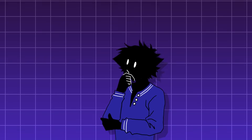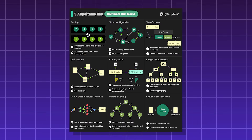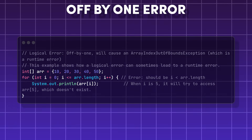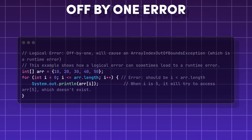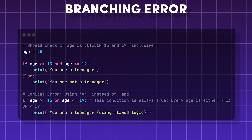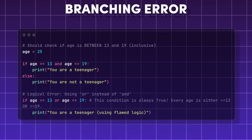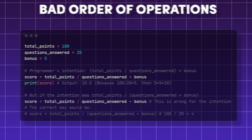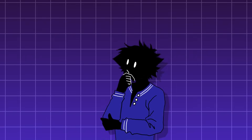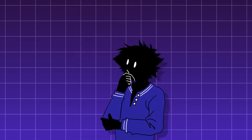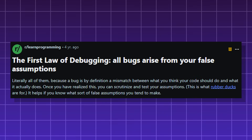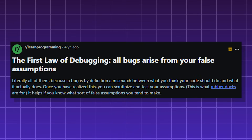Logic errors can be caused by developers implementing incorrect algorithms because they misunderstand the problem, and off-by-one errors, which happen when a program iterates through an array or list one too many or one too few times. Also branching errors, caused by incorrect use of conditionals or wrong logical operators, incorrect use of order of operations, incorrect use of variables, and most importantly, bad assumptions — whether about user actions, available memory, or file access.